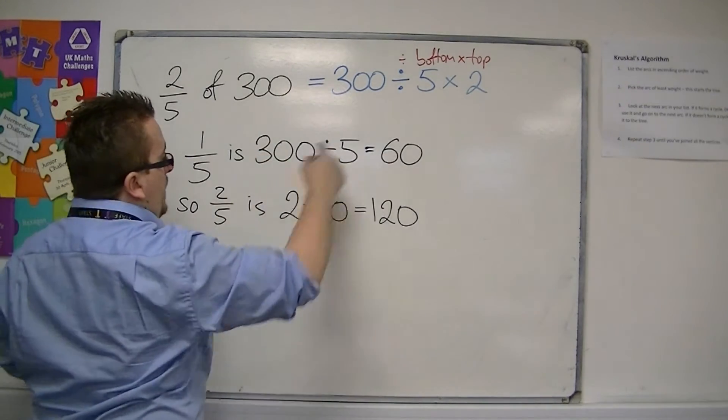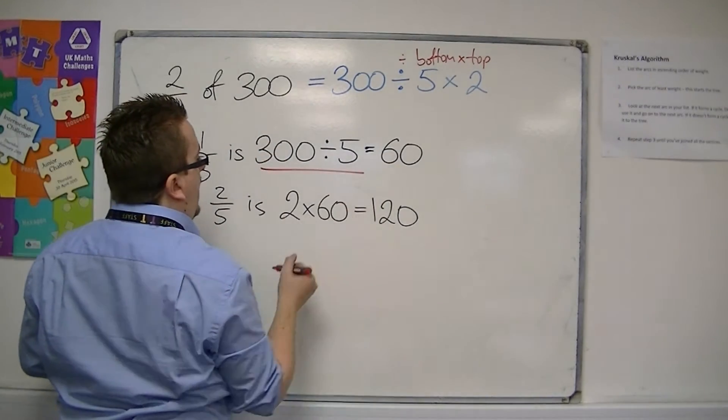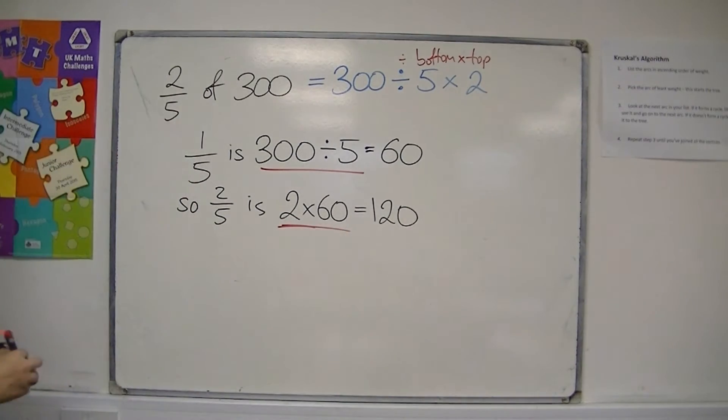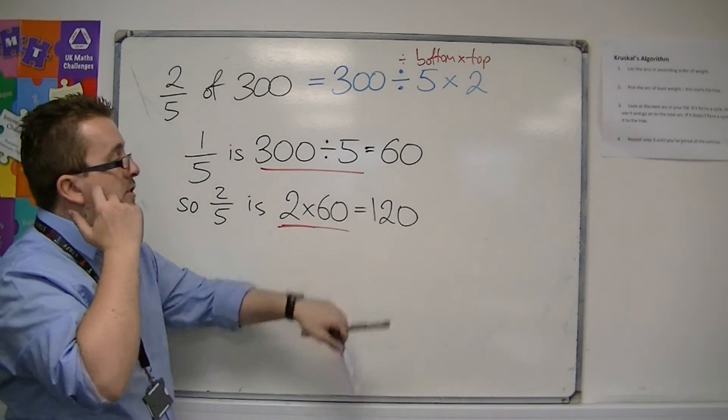So we divide by five, which we did here, and then we times by the top. So 300 divided by five is 60, and two times 60 is 120.